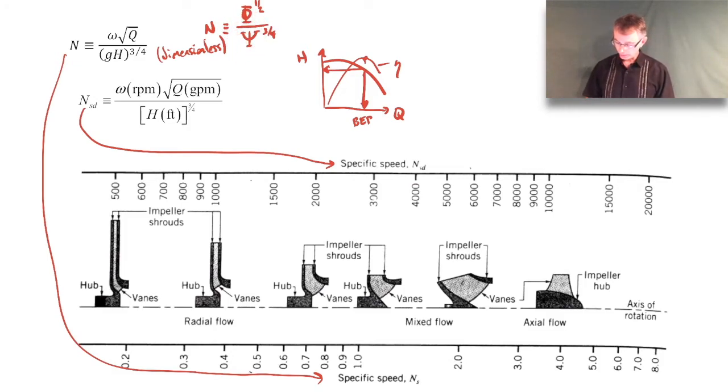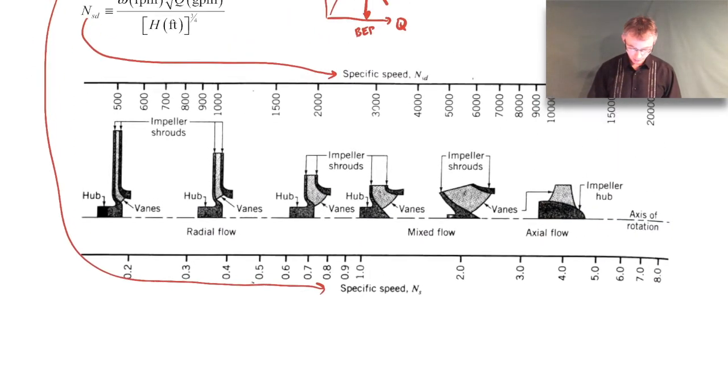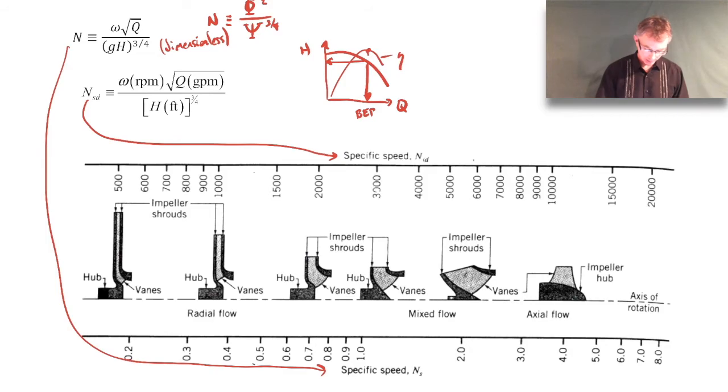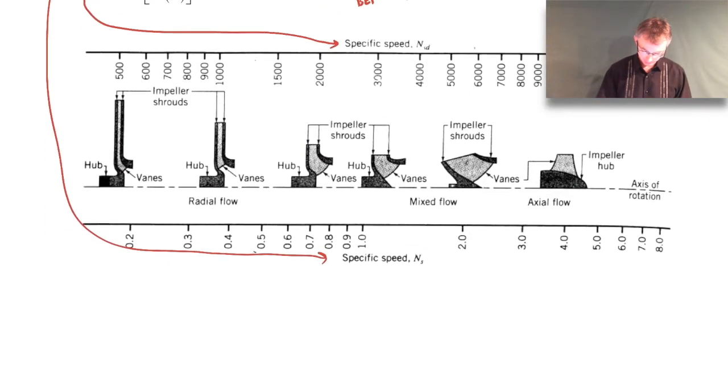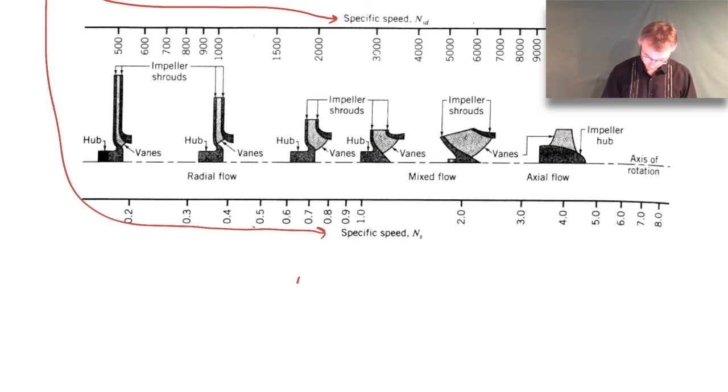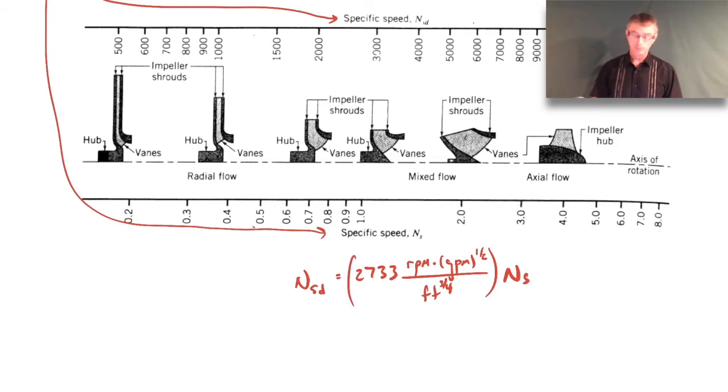So specific speed, again, just allows you to figure out what class of pump type is going to be most efficient for your given operation. All right, so let's see if there's any additional things I wanted to say. If you wanted to convert between the dimensionless and the dimensional specific speeds, the conversion is the following. So let's see here, the dimensional one is 2733 RPM gallons per minute square root all over feet to the three-fourths power times the dimensionless specific speed. So if you wanted to do that conversion, there it is.